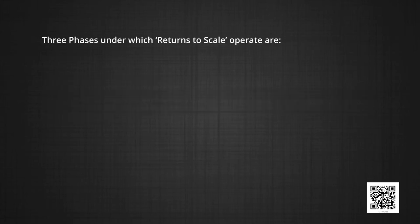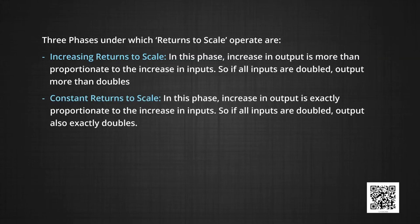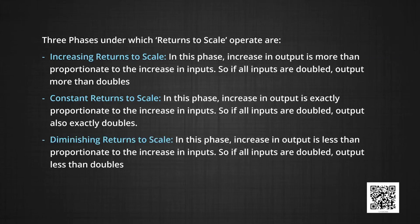Three types of returns to scale operate. First, increasing returns to scale: the increase in output is more than proportionate to the increase in inputs — if all inputs are doubled, output more than doubles. Second, constant returns to scale exist when an increase in output is exactly proportionate to the increase in inputs — if all inputs are doubled, output also exactly doubles. Third, decreasing returns to scale: this is the case when the increase in output is less proportionate to the increase in inputs — if all inputs are doubled, output also increases, but it less than doubles.